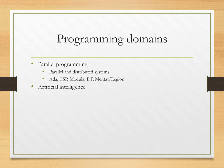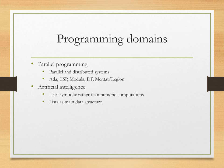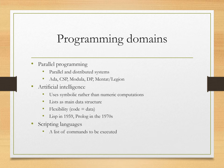Artificial intelligence is a major domain of programming, one that is seeing rapid growth in the market right now. Basically, the idea is to use symbolic rather than numeric computations, and it uses lists as a main data structure, getting more flexibility by looking at code in the form of data. Lisp in 1959 and Prolog in the 1970s really started this trend heading into AI using programming. Another domain is scripting languages — a list of commands that need to be executed. You might use Unix shell programming, AWK, TCL, or Perl.